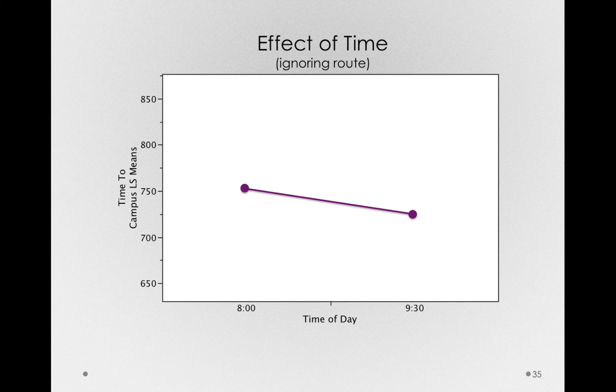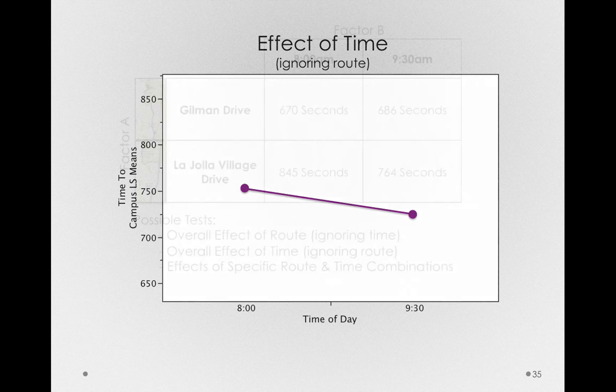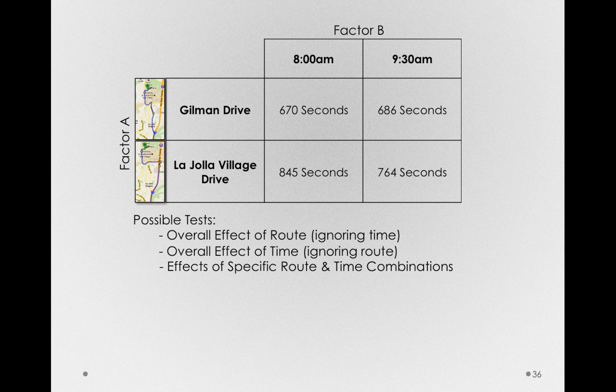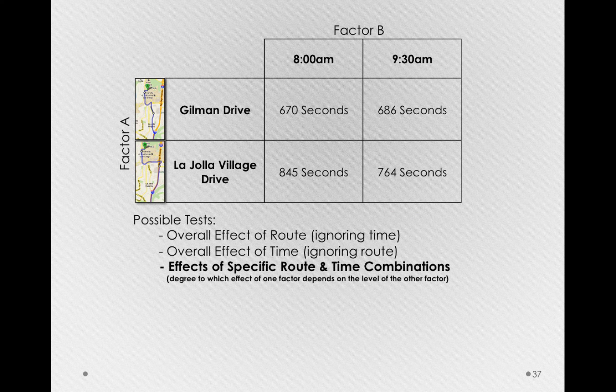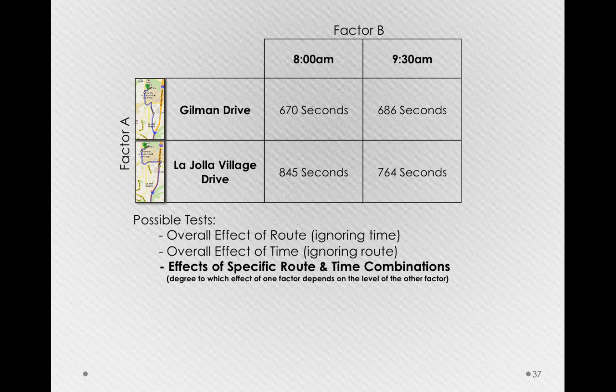Or, said differently, ignoring route. So far, we've seen the data that would contribute to the first two tests. What about that third test? The effect of the specific route and time combination.